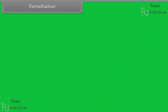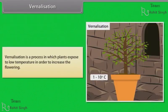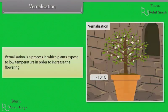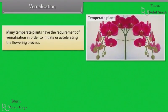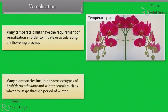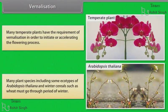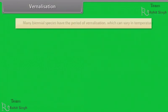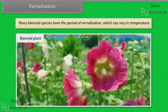Vernalization is a process in which plants are exposed to low temperature in order to increase flowering. Many temperate plants have the requirement of vernalization in order to initiate or accelerate the flowering process. Many plant species, including some ecotypes of Arabidopsis thaliana and winter cereals such as wheat, must go through a period of winter. Many biennial species have a period of vernalization which can vary in temperature.